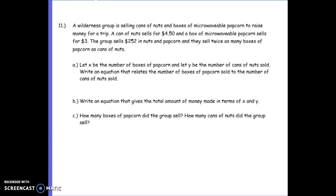The first one says: a wilderness group is selling cans of nuts and boxes of microwavable popcorn to raise money for a trip. A can of nuts sells for $4.50, and microwavable popcorn sells for $3.00. The group sells $252 in nuts and popcorn, and they sell twice as many boxes of popcorn as cans of nuts.